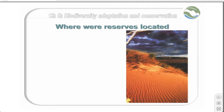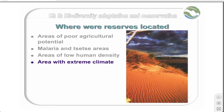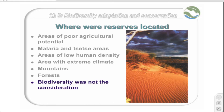The initial location of reserves in the sub-region was anything but strategic from a biodiversity conservation perspective. Most reserves were set up on land not being used for other purposes, so few are found in areas with high agricultural potential. Many reserves are located in areas with high disease probability, particularly malaria and tsetse areas. Reserves are normally set up in areas with low human population density. Reserves are also often found in areas with extreme climates, mountainous areas with low agricultural potential, and forest patches in South Africa — clearly biodiversity was not the main consideration in this process.